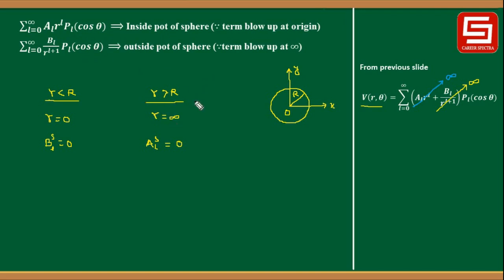Similarly, for the outside region at r = ∞, the term r^l tends to infinity, so for the potential to remain finite we set A_l = 0. This gives the outside potential as Σ B_l / r^(l+1) P_l(cosθ). So the general solution is inside plus outside: use the A_l term for inside potential and the B_l term for outside potential.